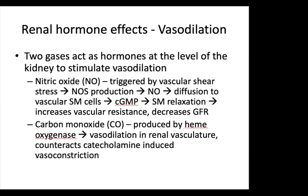For vasodilation, two gases act as hormones at the kidney level. Nitric oxide is triggered by vascular shear stress, which initiates nitric oxide synthase production; this causes diffusion to vascular smooth muscle cells, increasing cGMP production, causing smooth muscle relaxation and increasing vascular resistance while decreasing GFR. The other gas is carbon monoxide, produced by heme oxygenase, which catalyzes conversion of heme into carbon monoxide, iron, and biliverdin. Carbon monoxide causes vasodilation in the renal vasculature and counteracts catecholamine-induced vasoconstriction.